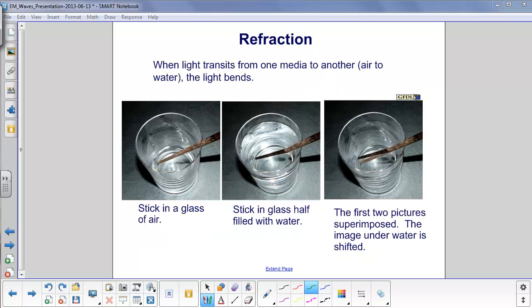Refraction is another common phenomenon, which is a little trickier to explain than reflection. It occurs when light transits from one media to another. For example, air to water, water to air, air to glass. What happens is the light bends.